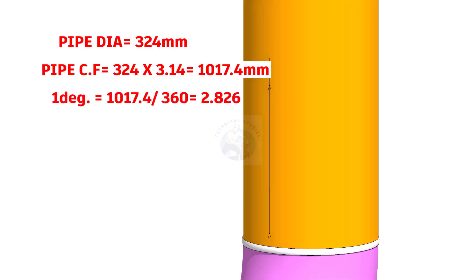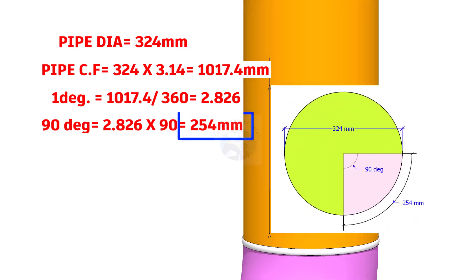1 degree equals 1017.4 divided by 360 equals 2.826. 90 degree equals 2.826 multiplied by 90 equals 254mm. This is the arc length for 90 degree in a 324mm diameter circle.